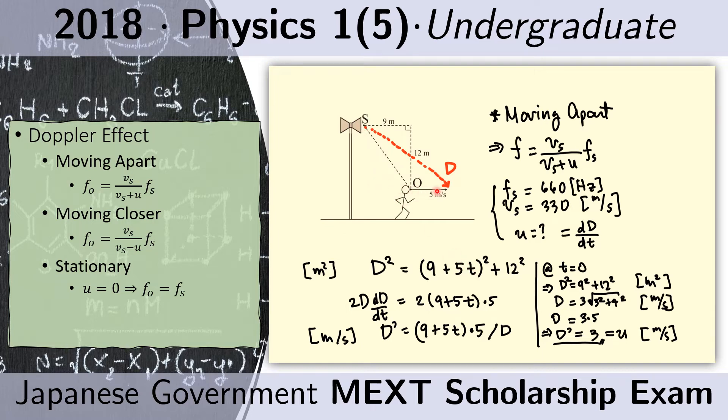Now we are looking for this quantity dd over dt. This is the speed at which this red line, this red length, is changing. To do that, we just differentiate both sides of this equation.